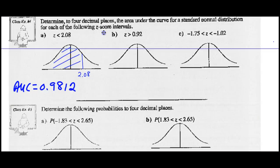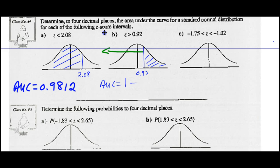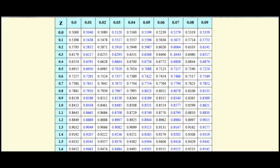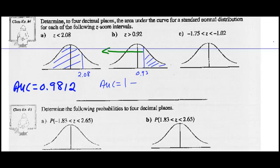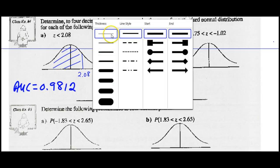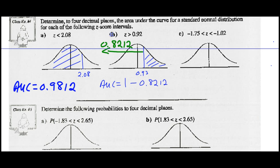Example 4B: what's the area under the curve for a Z-score greater than 0.92? Our Z-score tables only give us the area left of the Z-score, so we go 1 minus the area left of 0.92. Looking up 0.92 in our table, that area is 0.8212. So the area right of our Z-score is 1 minus 0.8212, which gives 0.1788.